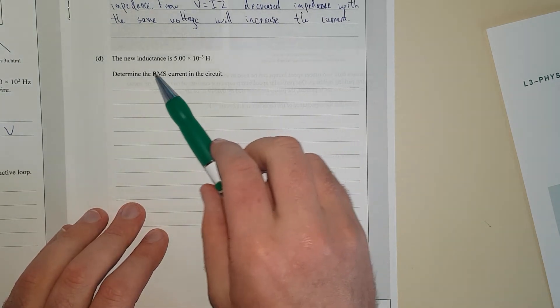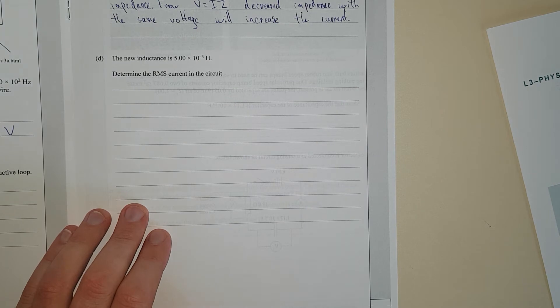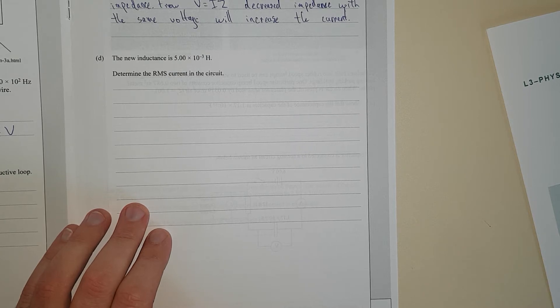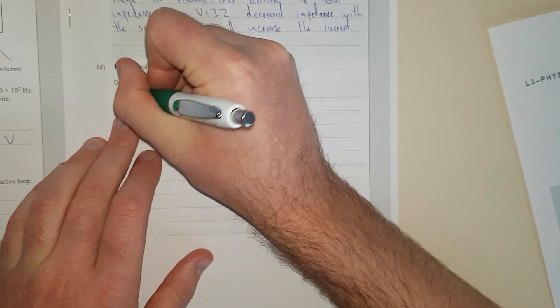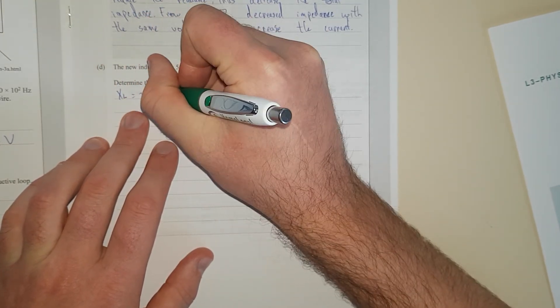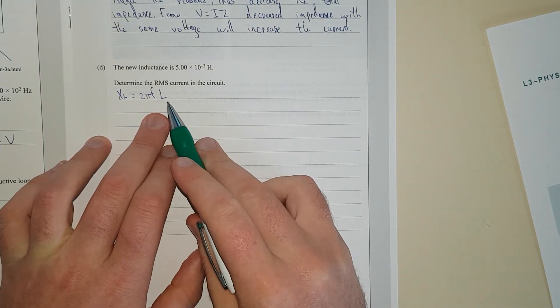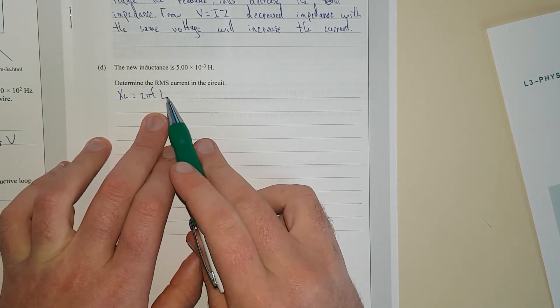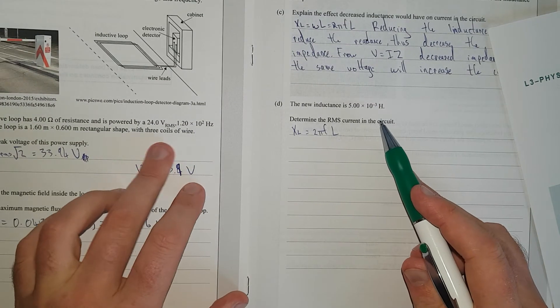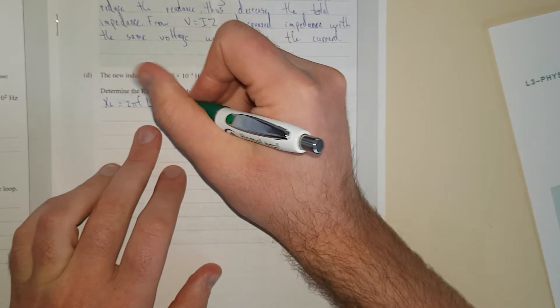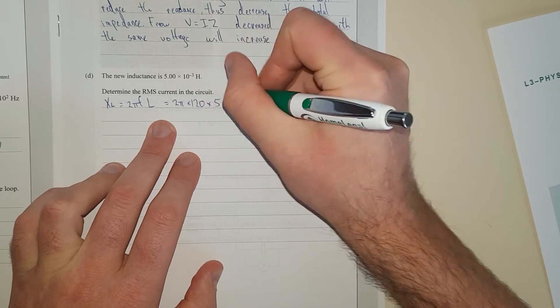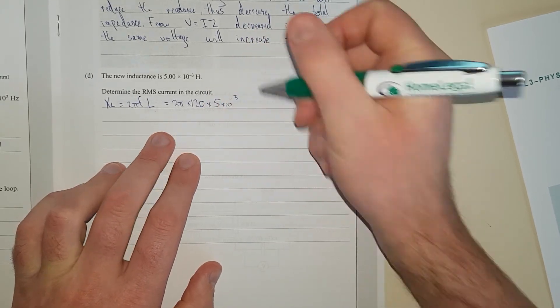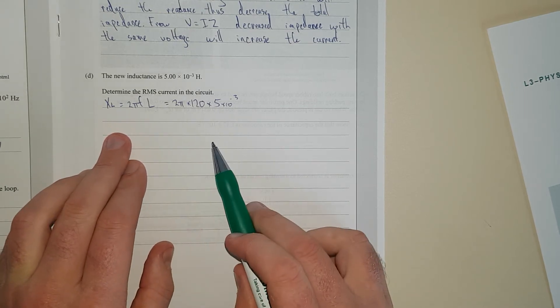The new inductance is 5 times 10 to the negative 3 Henrys. Determine the RMS current in the circuit. Now we're going to find the reactance of the inductor. XL equals 2πF times the inductance. We've got a new inductance and we've still got the same frequency, 120 hertz. So this equals 2π times 120 times 5 times 10 to the negative 3.